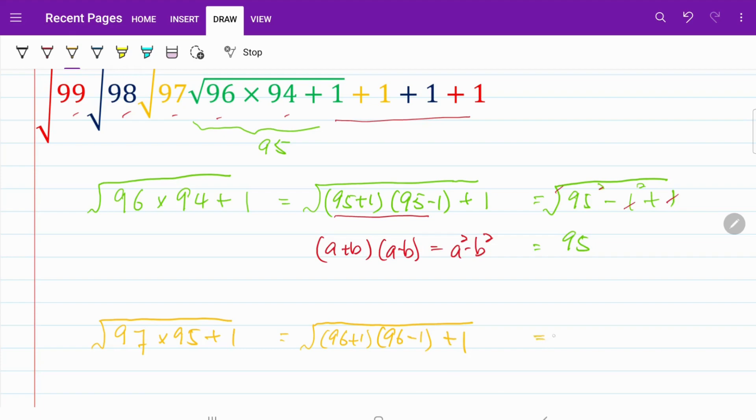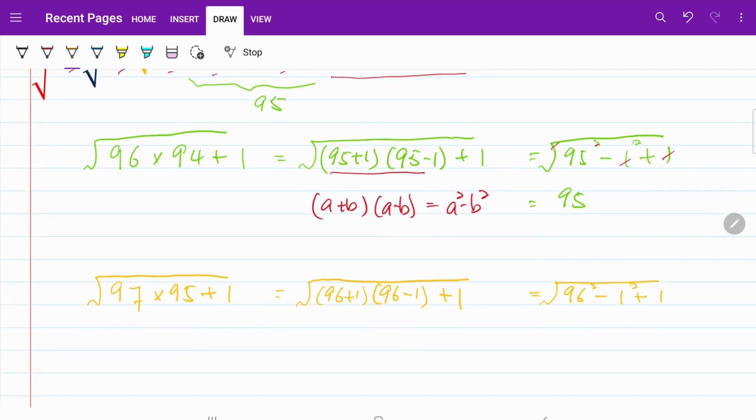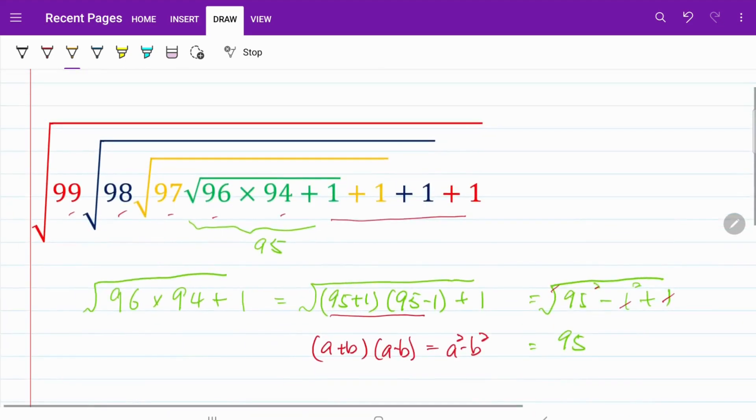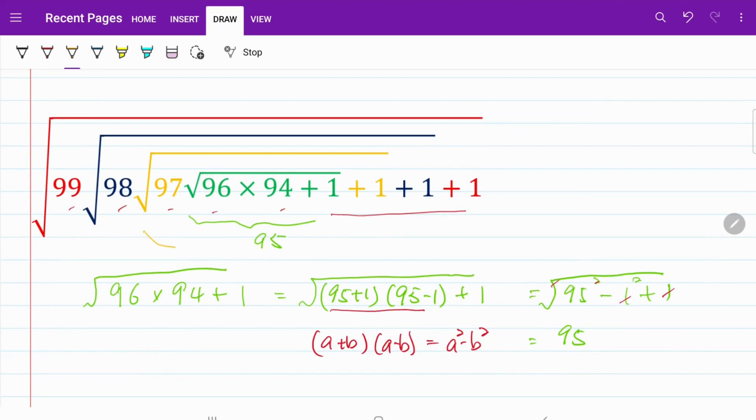Again, using the same identity on the difference of squares, I can write that as 96 squared minus 1 squared plus 1, which is then equal to 96. In other words, my yellow square root is equal to 96.